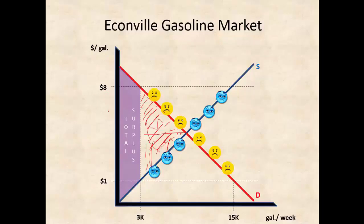In a free market, these prices will get adjusted. If the price is too high, these excluded sellers and buyers can agree at a slightly lower price. And if the price is too low, the excluded buyers can raise the price. And so the market process will kick in and we'll get back to equilibrium.